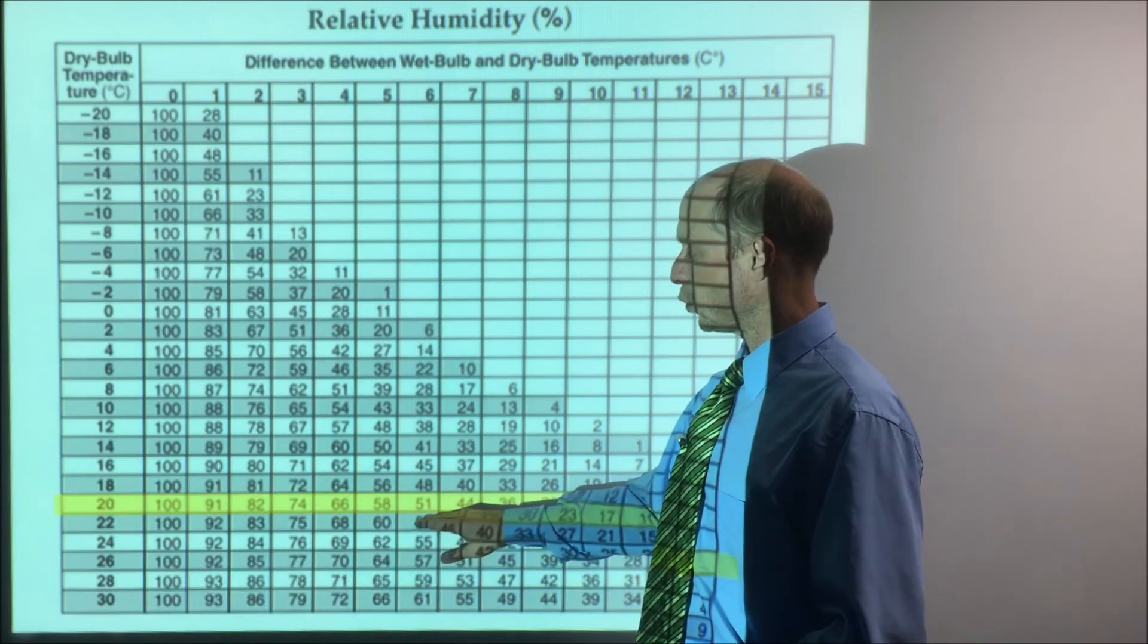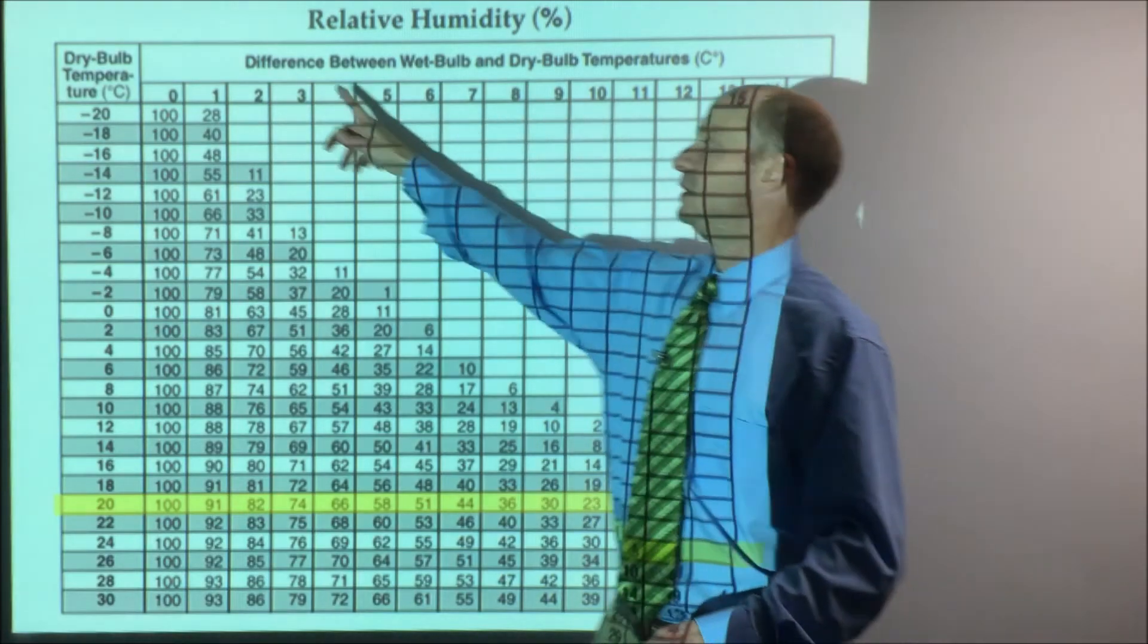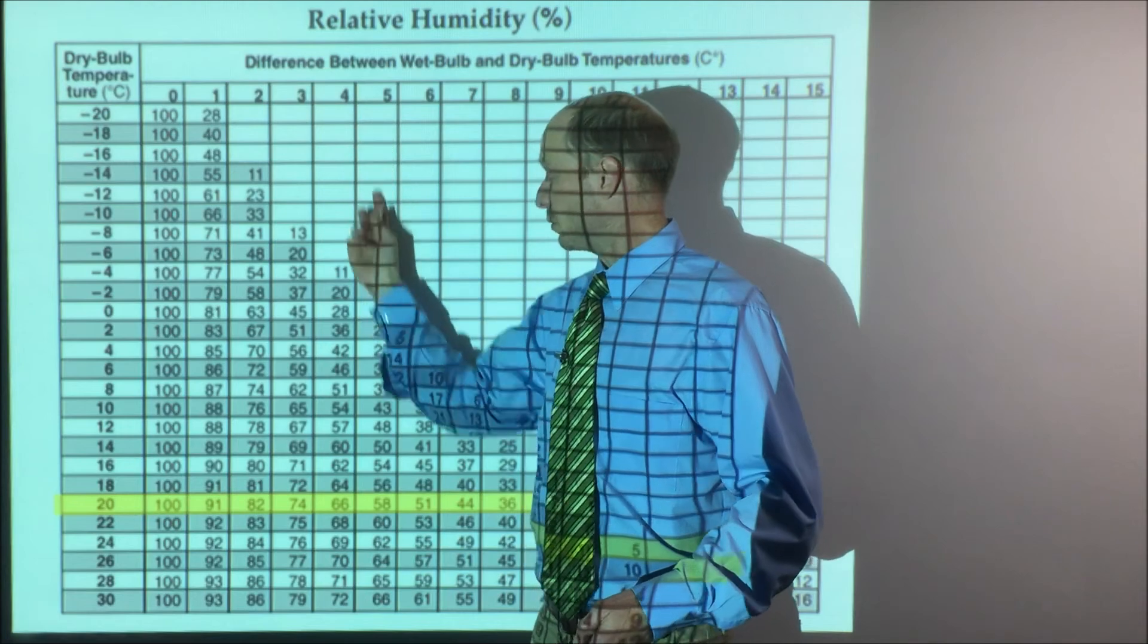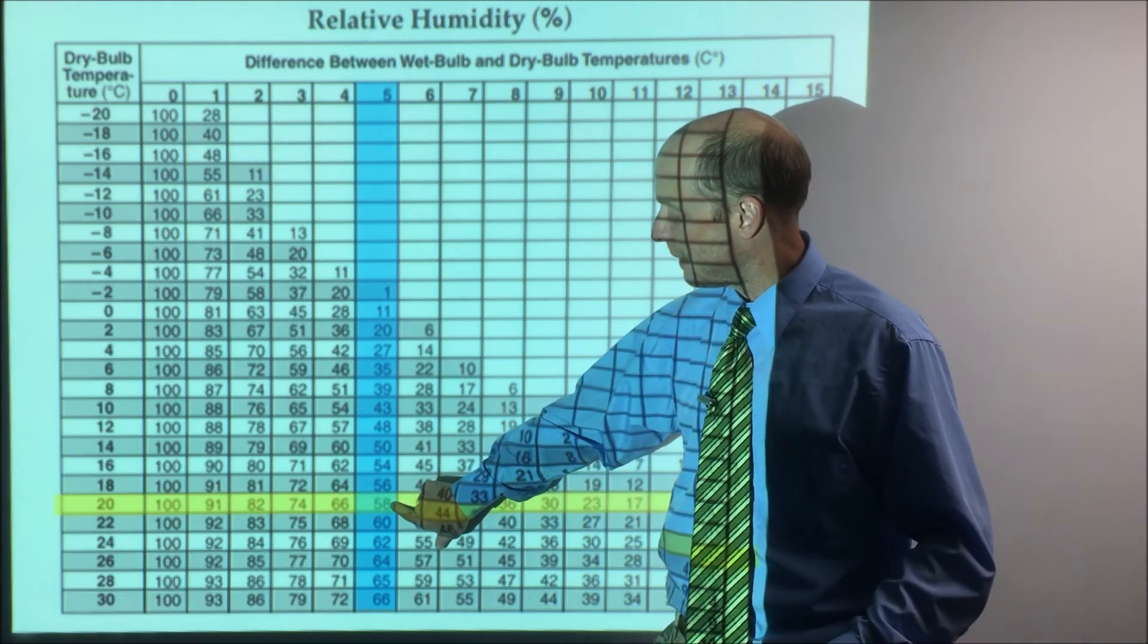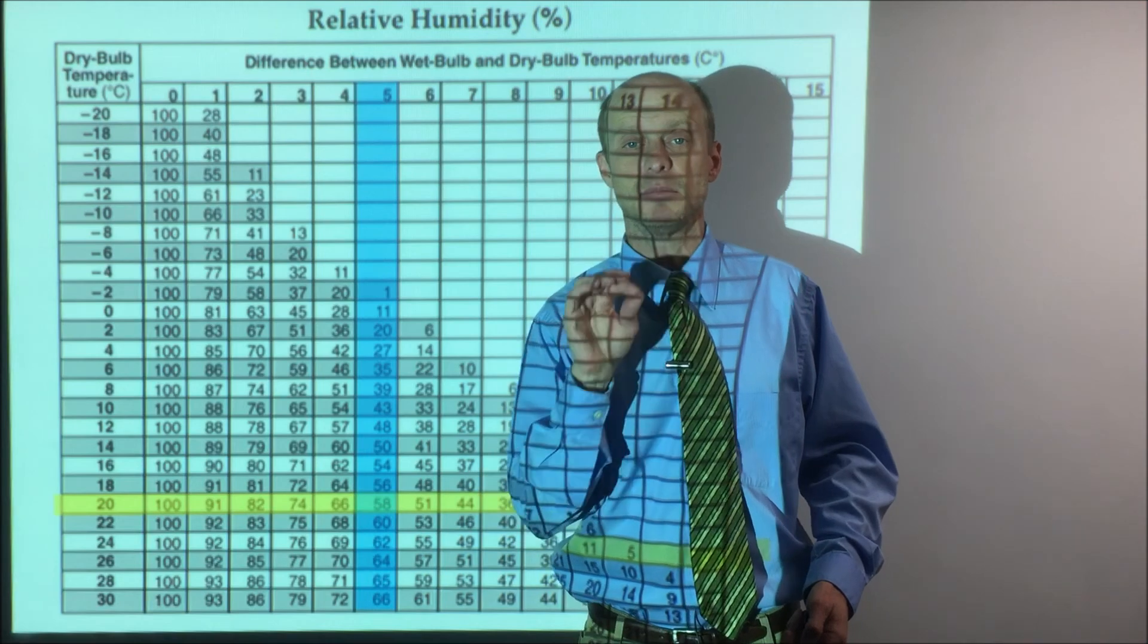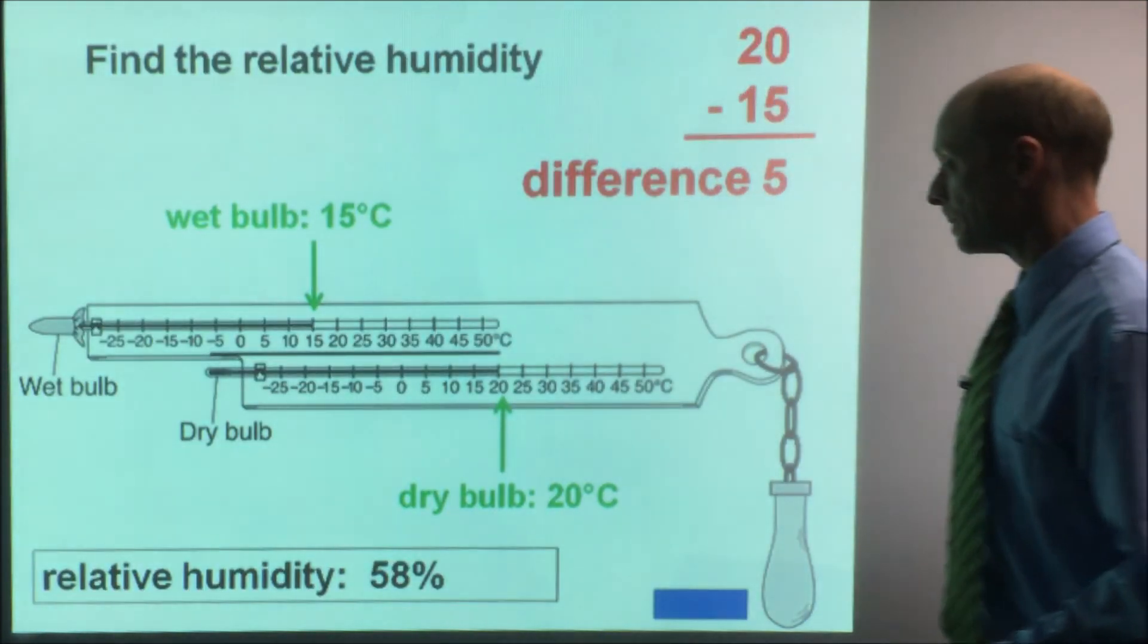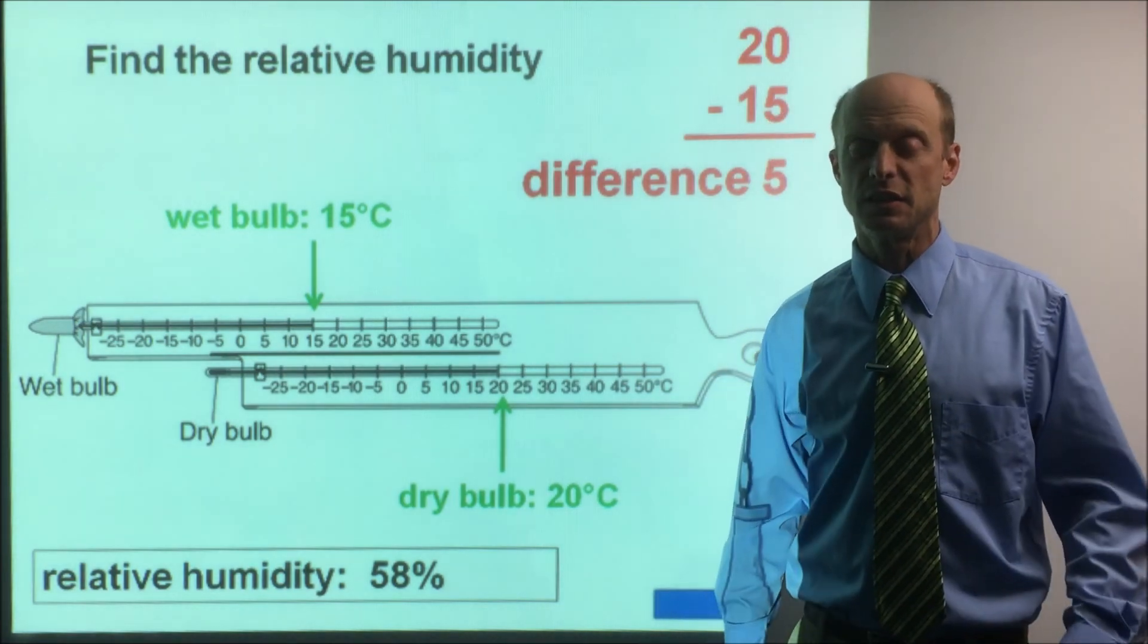Let's zoom in. So our dry bulb here is 20 and this is highlighted in yellow. And then we want to go to the difference, which is five for us. So you want to go down the five column. And where they meet, that one number that matches is 58. And what that represents is 58%. That's 58% full of water vapor. That is the relative humidity right there. This is the key skill you need to know how to do.